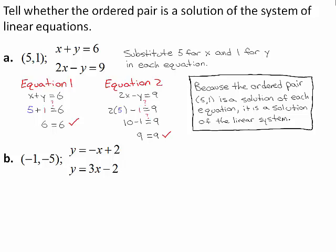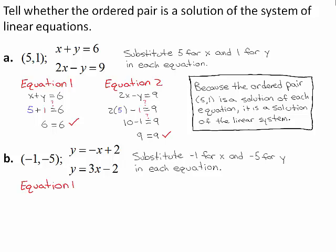Part B: the ordered pair is negative 1, negative 5. The system is: y equals negative x plus 2, and y equals 3x minus 2. Substitute negative 1 for x and negative 5 for y in each equation. Begin by writing the first equation, y equals negative x plus 2. The negative of negative 1 is 1, and 1 plus 2 equals 3.